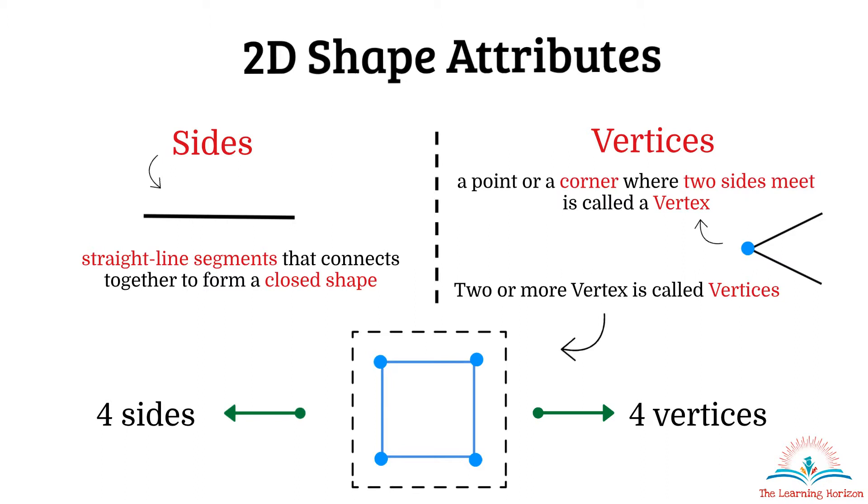Now since we know the definition of two-dimensional shapes and these two basic attributes, let us look at some of the common 2D shapes and understand these attributes better.